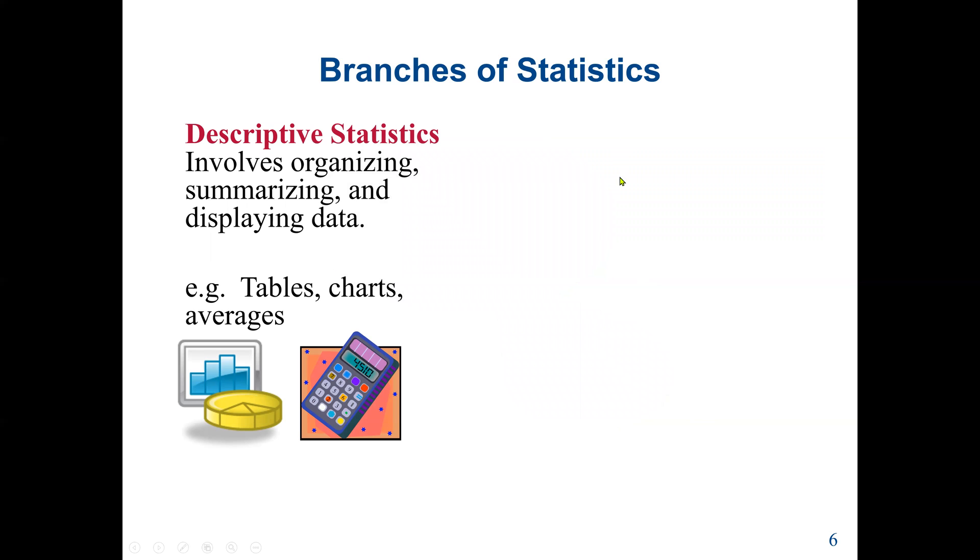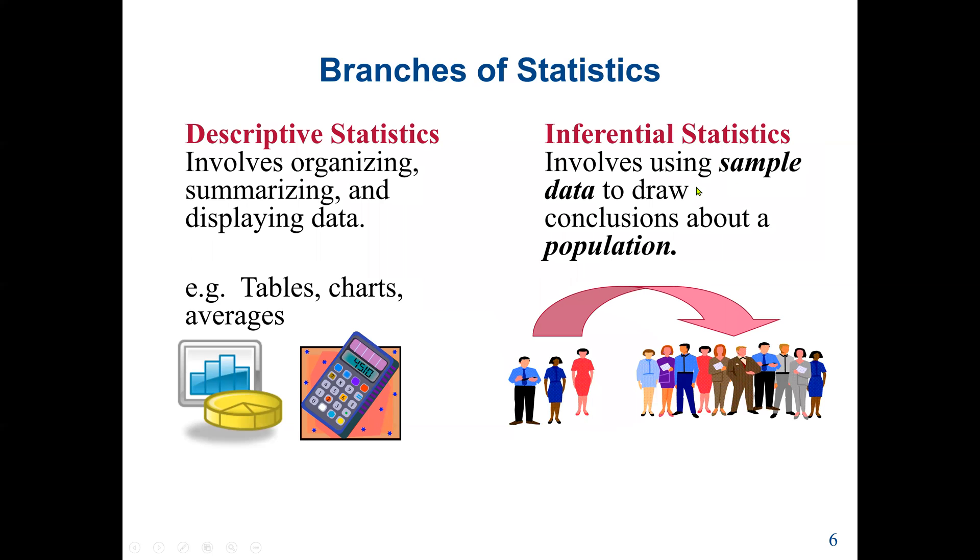The branches of statistics: descriptive statistics involves organizing, summarizing, and distributing data. For example, tables, charts, finding the average, like central tendency or the standard deviation. Then inferential statistics involves using the sample data to draw conclusions about the population. For example, here we have the whole population. We took a sample of three and we are going to test the sample. The results we get, we are going to apply to all the population.